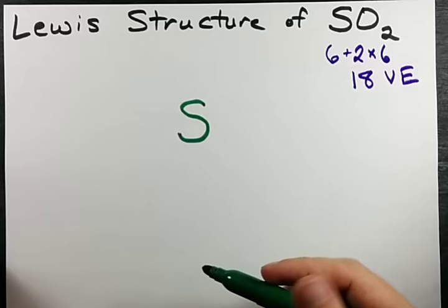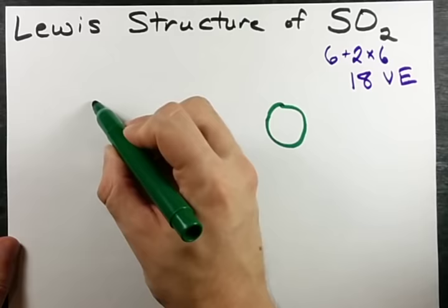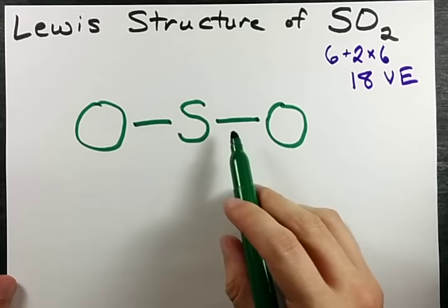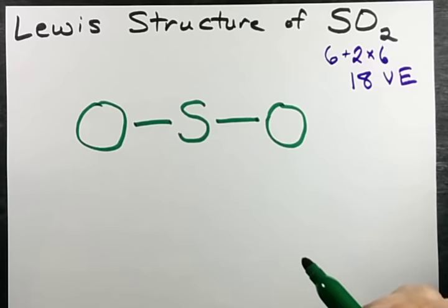So, there's my sulfur in the center. Here are my oxygens on the outer bits of my molecule. I like to connect them with bonds to start off. Those 2 bonds costed me 4 electrons. 1, 2, 3, 4 electrons already in my structure. I need 18 total.